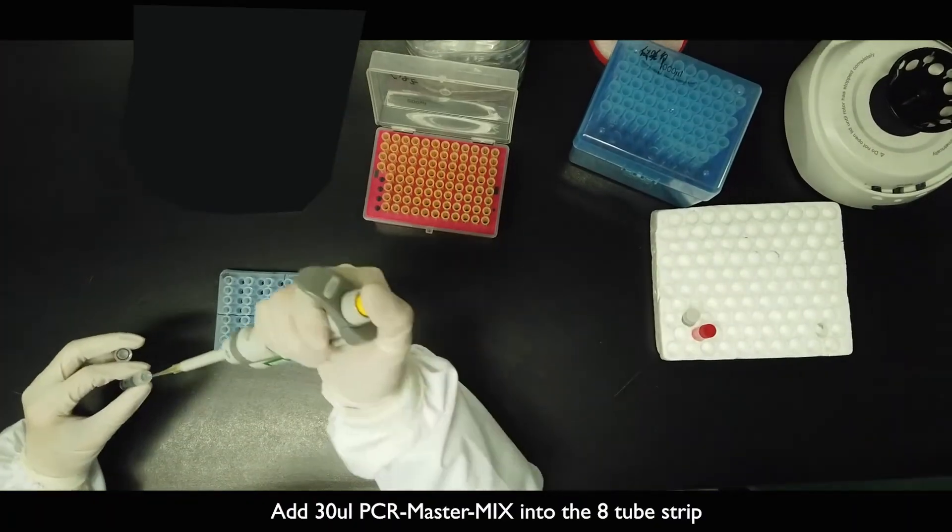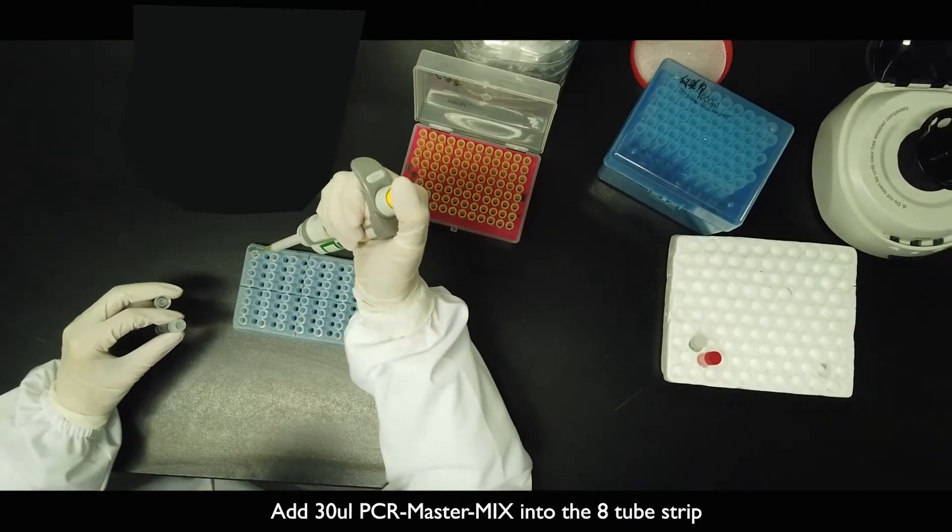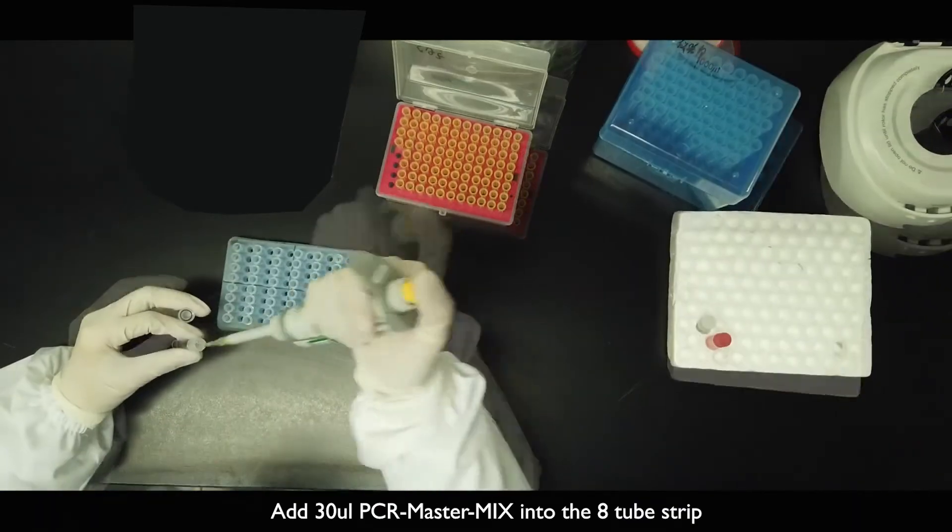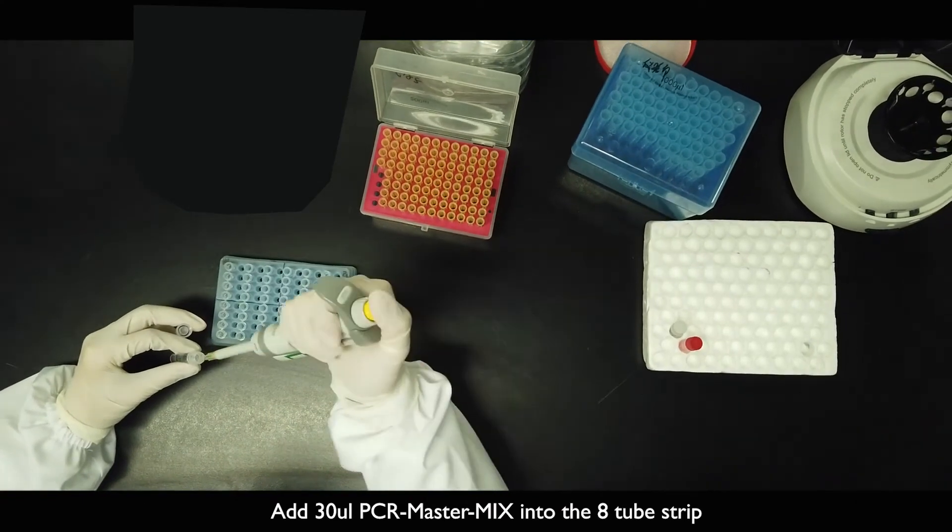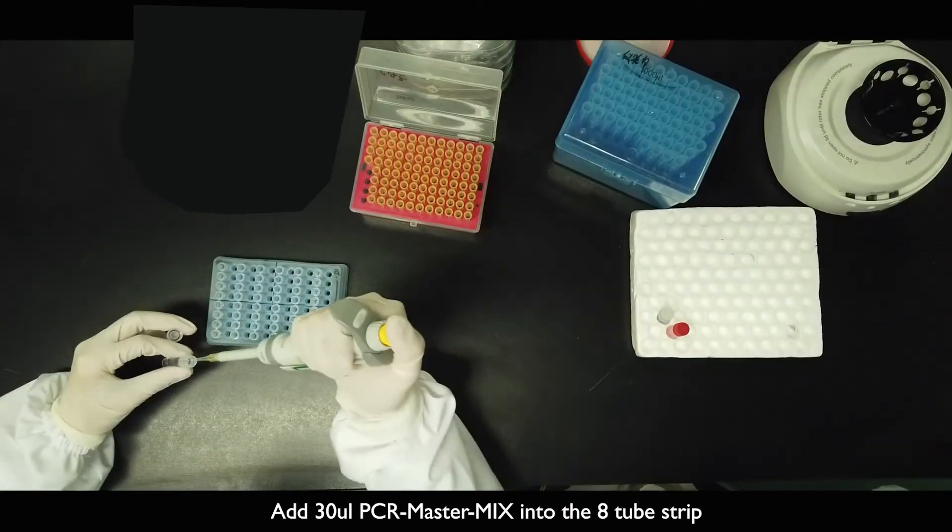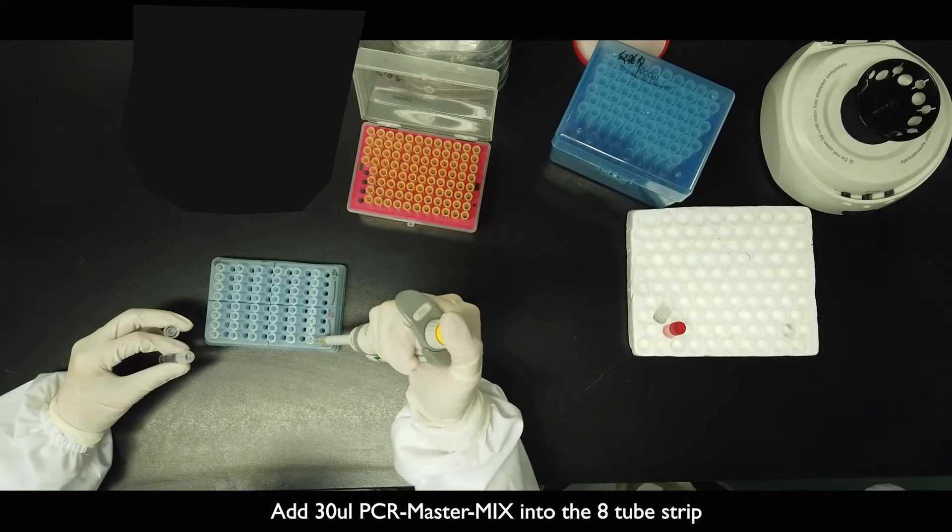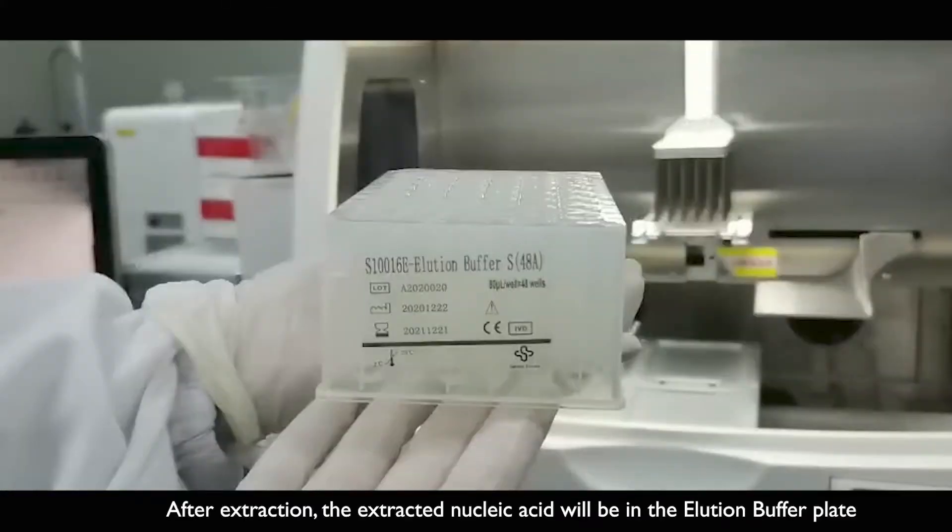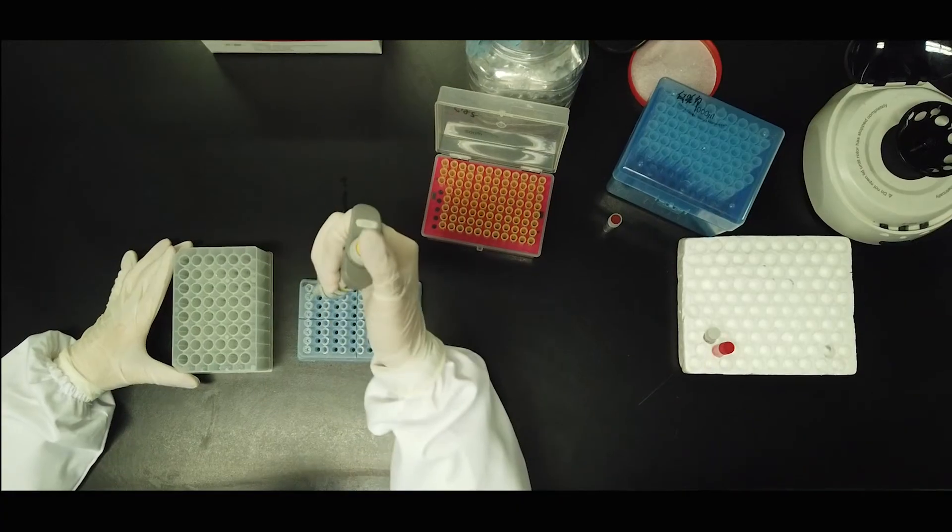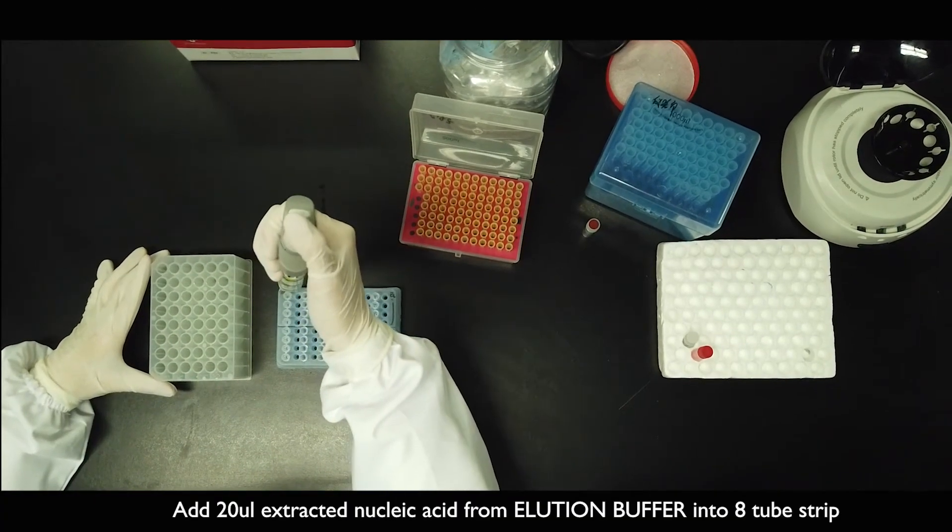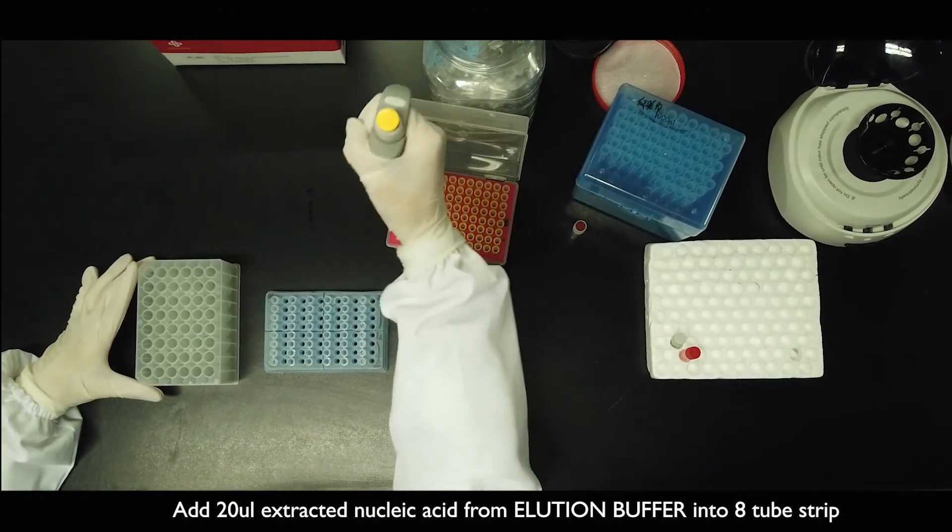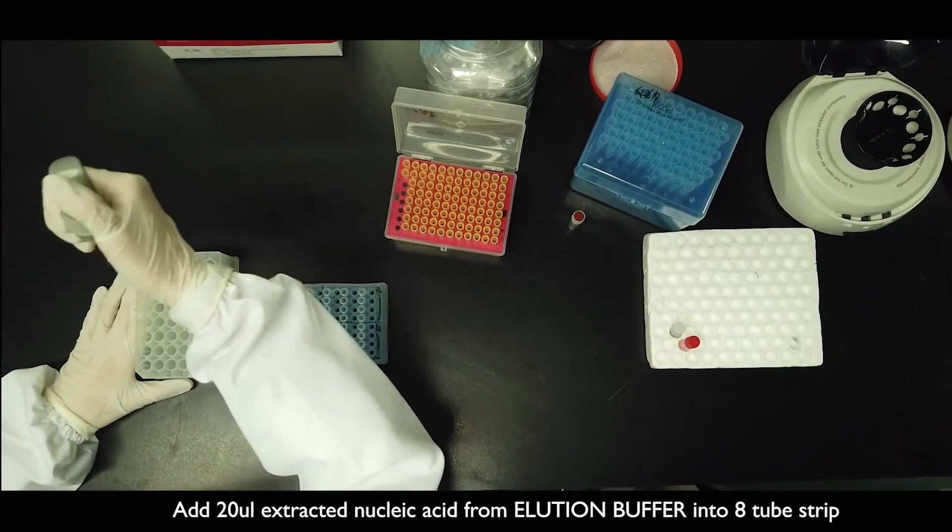Add 30 µL PCR master mix into the A tube strip. After extraction, the extracted nucleic acid will be in the elution buffer plate. Add 20 µL extracted nucleic acid from elution buffer into the A tube strip.